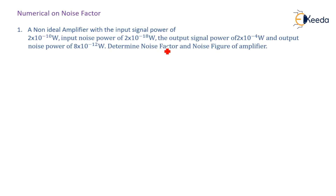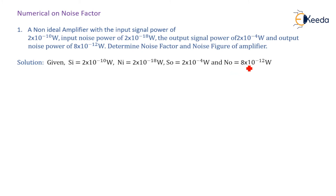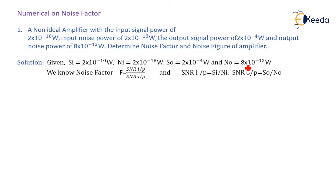Determine the noise factor and noise figure of the amplifier. The given values are: input signal power SI = 2×10⁻¹⁰ W, input noise NI = 2×10⁻¹⁸ W, output signal power SO = 2×10⁻⁴ W, and output noise power NO = 8×10⁻¹² W. We know noise factor F equals SNR at input divided by SNR at output.